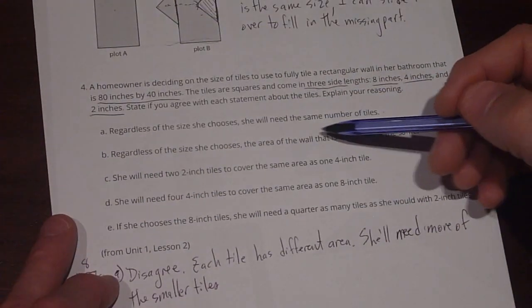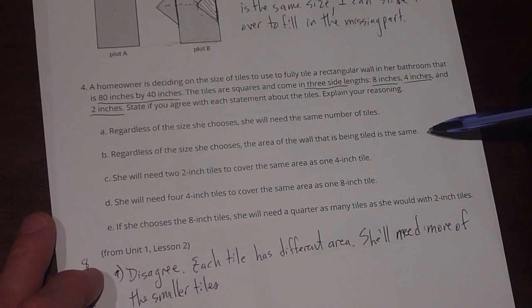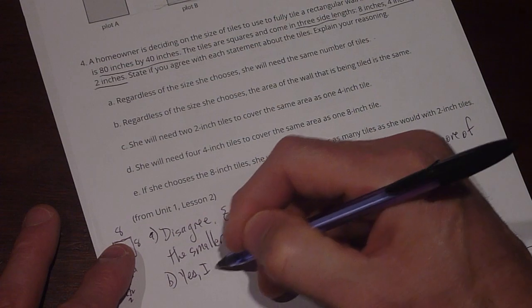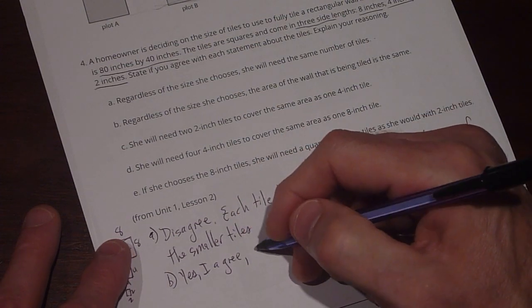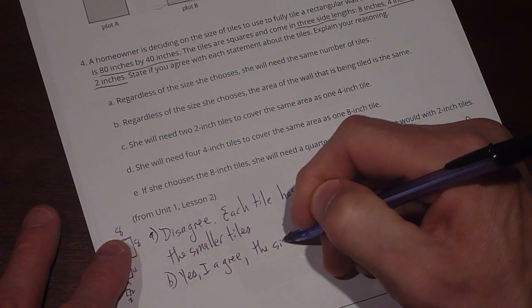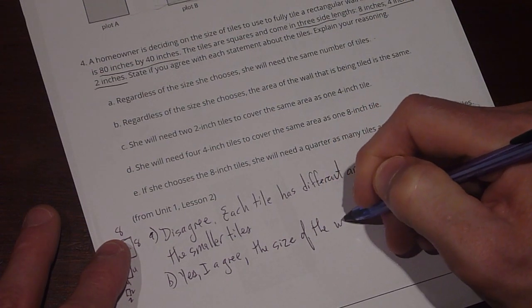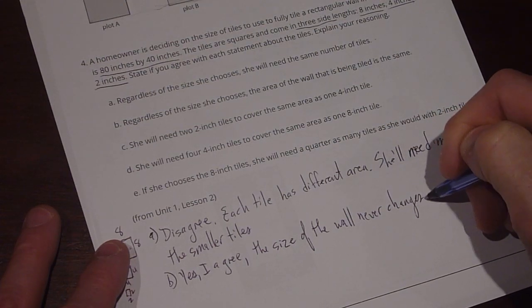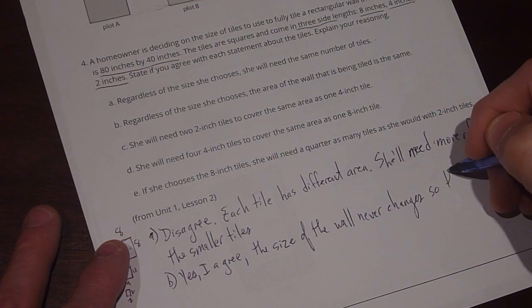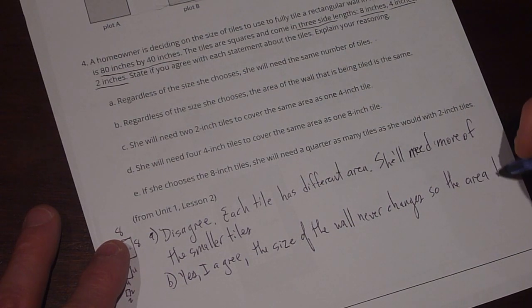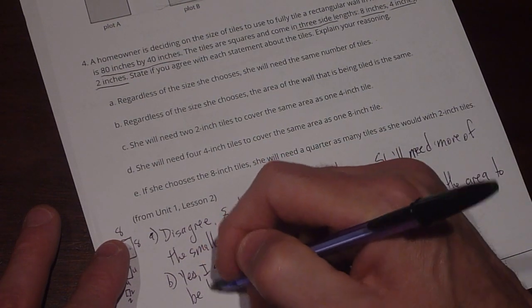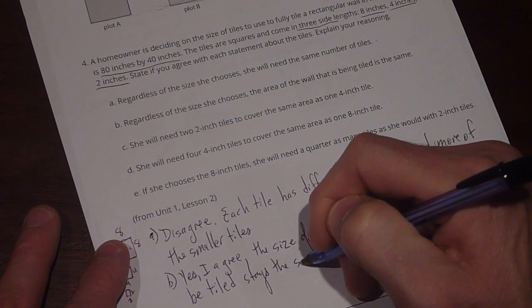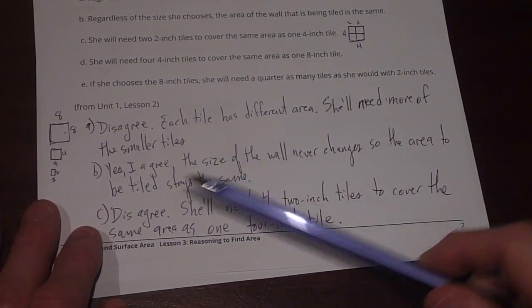B. Regardless of the size she chooses, the area of the wall that is being tiled is the same. Yes. I agree. Because the size of the wall never changes. Never changes. So the area stays the same. Or the area to be tiled stays the same.